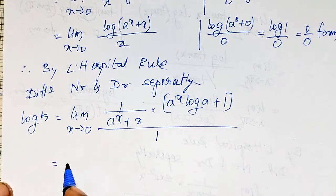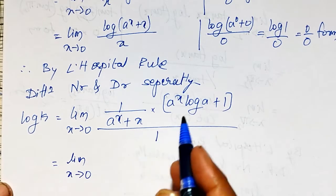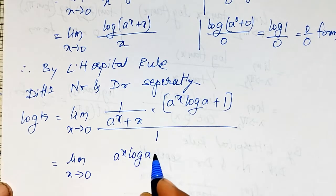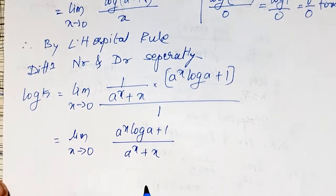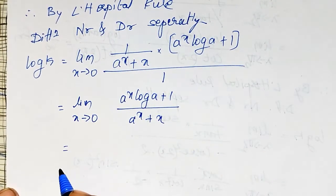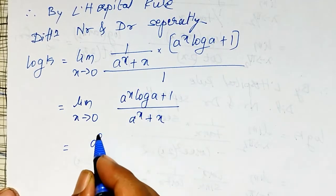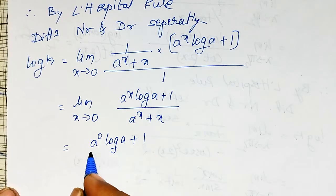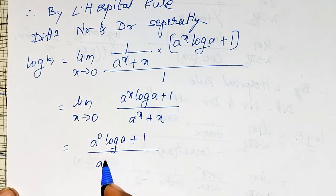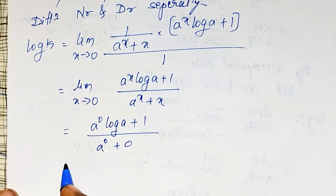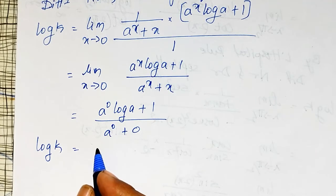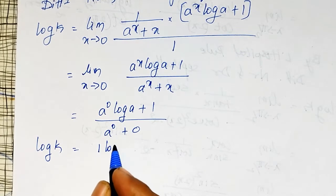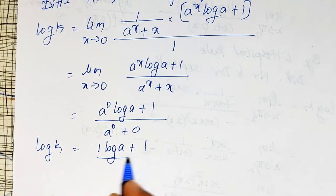Now substituting x equal to 0 and checking whether we get a finite form: the expression simplifies to (a raised to x times log a plus 1) divided by (a raised to x plus x). At x equal to 0: the numerator is a raised to 0 times log a plus 1, and the denominator is a raised to 0 plus 0. So log k equals (1 times log a plus 1) divided by 1.